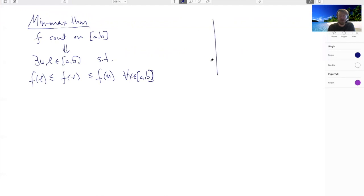So in terms of a drawing, this says that if I have my a here, my b here, my function looks something like this, then there exists at least one point where I take my global max and one point where I take my global min.